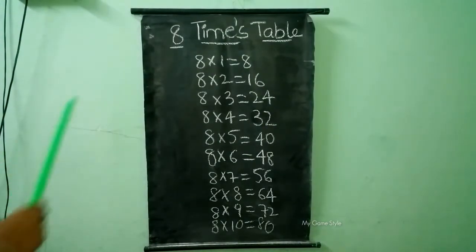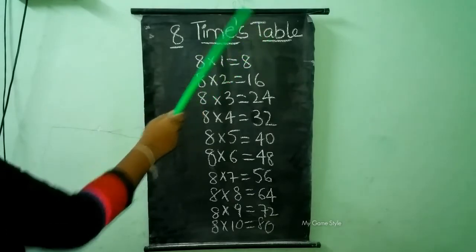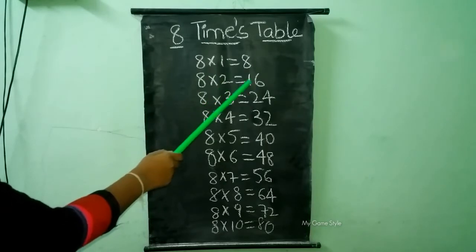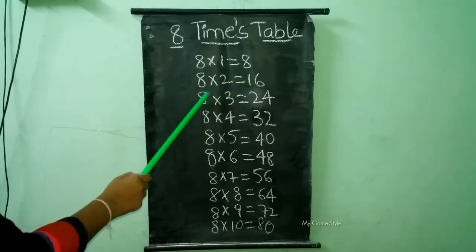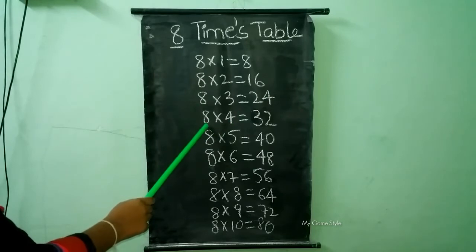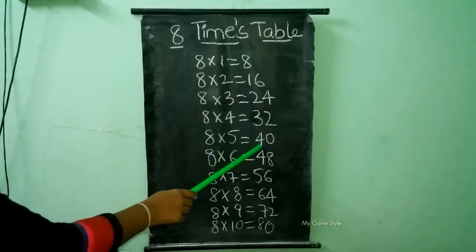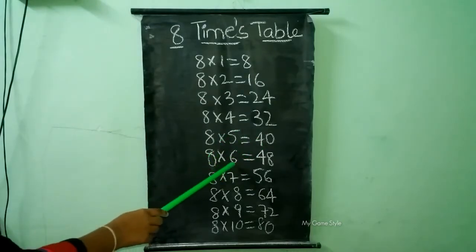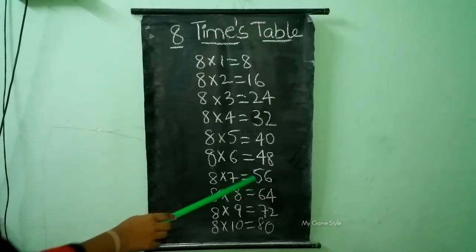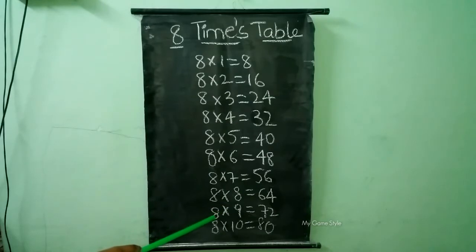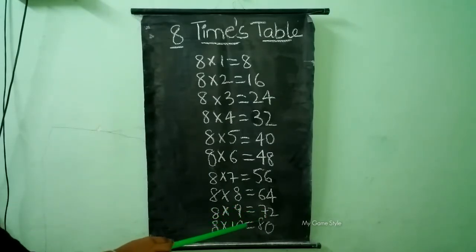8 times table. 8 times 1 is equal to 8. 8 times 2 is equal to 16. 8 times 3 is equal to 24. 8 times 4 is equal to 32. 8 times 5 is equal to 40. 8 times 6 is equal to 48. 8 times 7 is equal to 56. 8 times 8 is equal to 64. 8 times 9 is equal to 72. 8 times 10 is equal to 80.